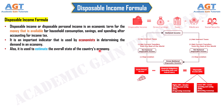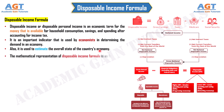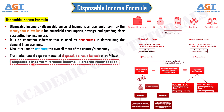The mathematical representation of the disposable income formula is as follows: Disposable income equals personal income minus personal income taxes. In short, it can be written as DPI = PI - PIT.